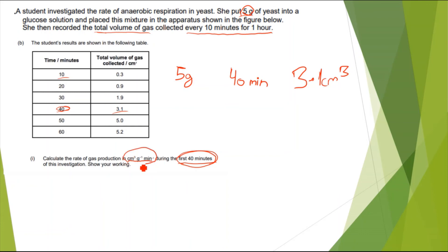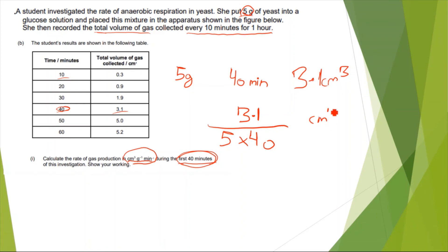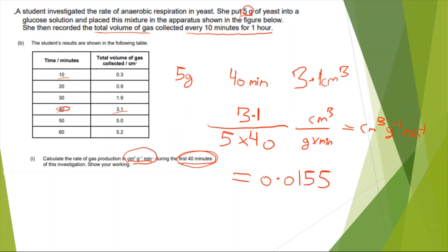Looking at my final units — centimetres cubed, grams to the power of minus 1, minutes to the power of minus 1 — I know that my 3.1 will be at the top. And because the other two units are to the power of minus 1, I need to be dividing by them. So it should be 3.1 divided by (5 times 40). Checking the units: this is centimetres cubed over grams multiplied by minutes, which gives centimetres cubed per gram to the power of minus 1 per minute to the power of minus 1. The final answer is 0.0155.